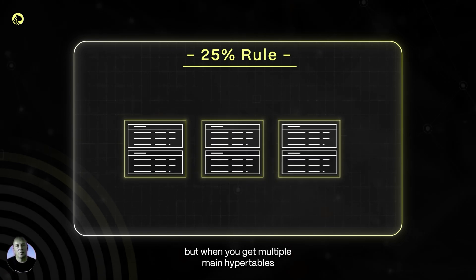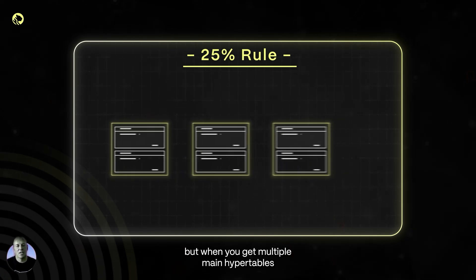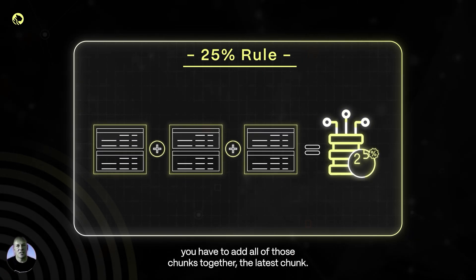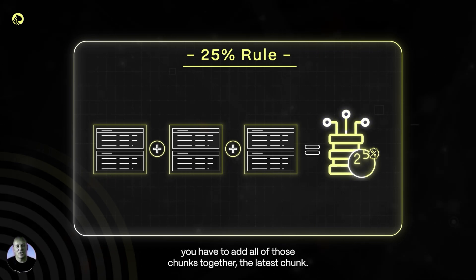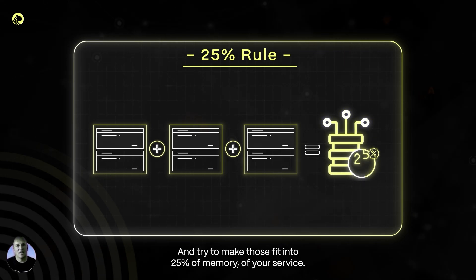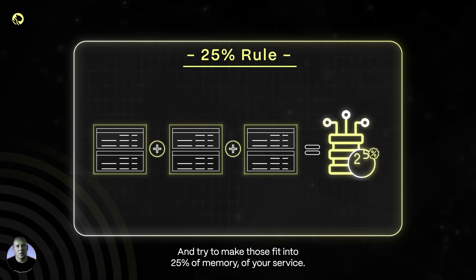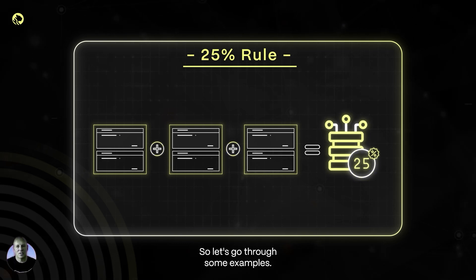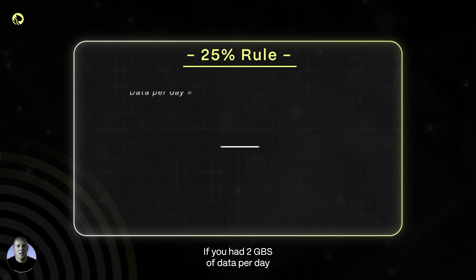With multiple main hyper tables, you have to add all of those latest chunks together and try to make them fit into 25% of the memory of your service. Let's go through some examples.